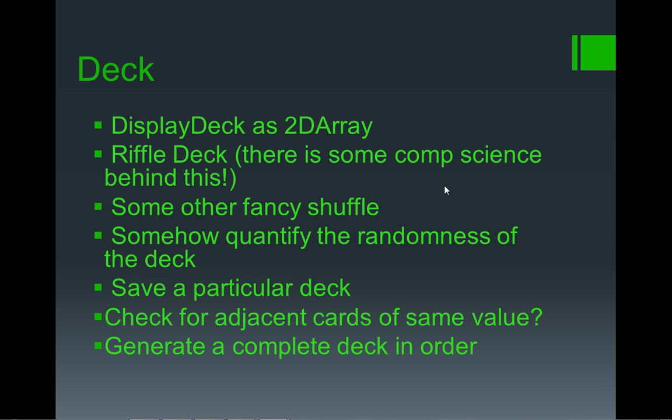Check for adjacent cards with the same value - basically how many pairs are going to come up for a particular deck. Something I think is an absolute must, even if it's not going to come up in the exam, is being able to generate a complete deck in order - a simple algorithm to generate from the ace of spades through to the king of spades, followed by the next suit in order. Just create yourself that algorithm anyway, because being able to test with a deck in order is massively easier than any other version of the deck.